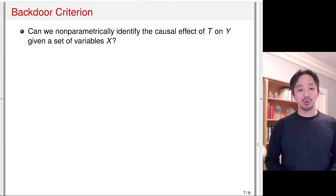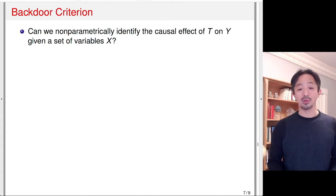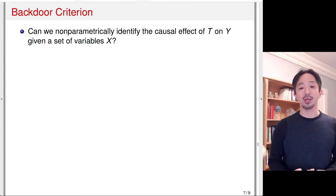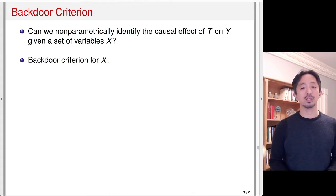Next, let's consider how to use a DAG to estimate or identify the causal effect. We introduce the backdoor criterion. This criterion answers the question: can we nonparametrically identify the causal effect of a variable T on the outcome Y, given a set of variables X? That is, by conditioning on or controlling for a set of variables X, can we identify the causal effect of the treatment on the outcome, given the graph we have?